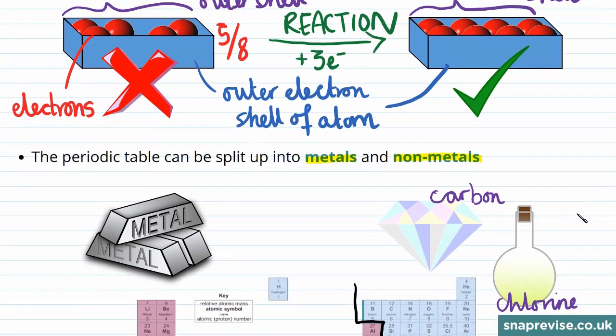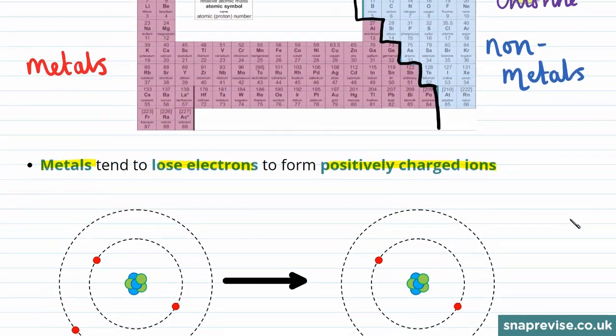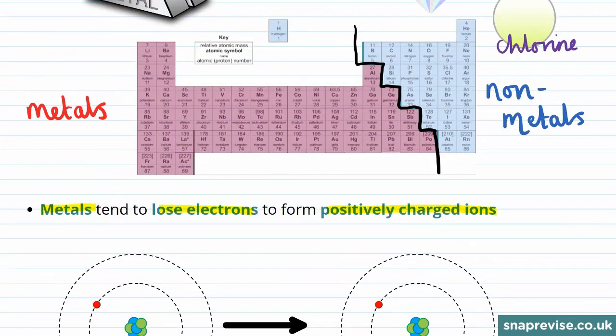However, an atom can also lose electrons in order to gain a full outer shell. This is most likely for elements that don't have that many electrons in their outer shell to start with.